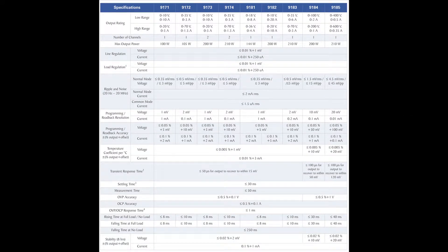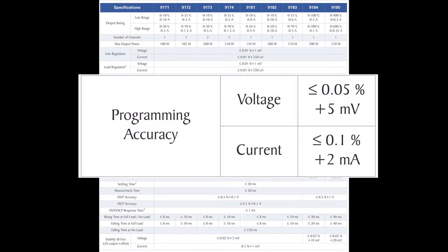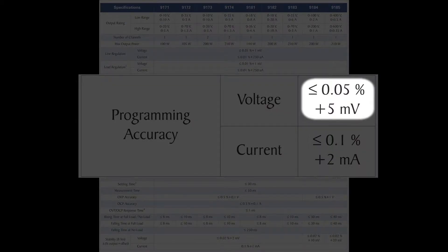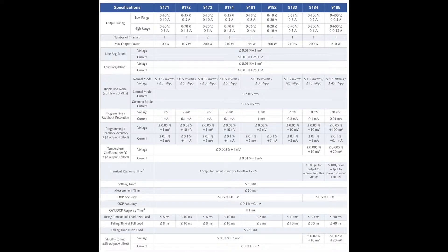This power supply specifies two different accuracies, programming and readback. Its programming accuracy is specified as less than 0.05% plus 5mV, less than 0.1% plus 2mA.